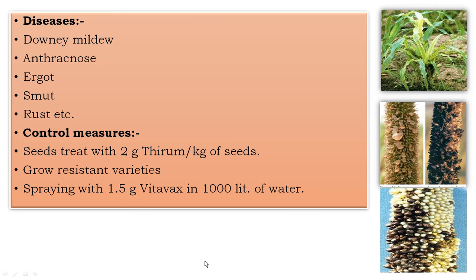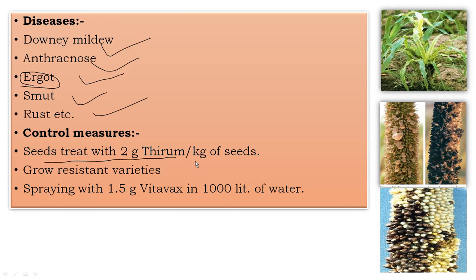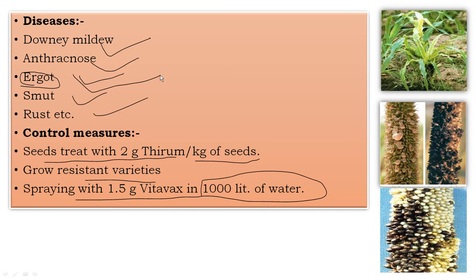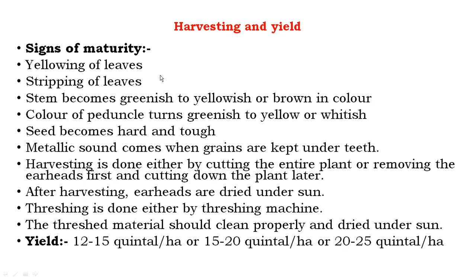For diseases, the major disease is ergot; other diseases are downy mildew, anthracnose, smut, and rust. Ergot-infested plants found in the field should be collected and destroyed. Seeds should be treated with 2 grams thiram per kg of seeds, and resistant varieties should be grown. Spray with 1.5 grams Vitavax in 1000 liters of water or give brine solution treatment before sowing for the control of ergot disease.